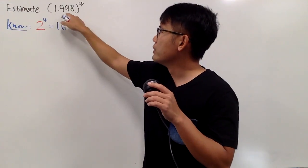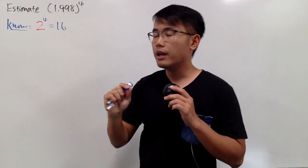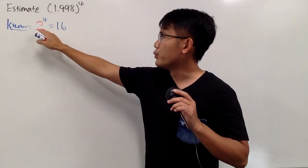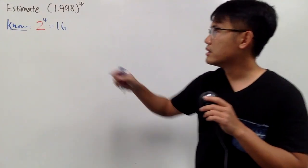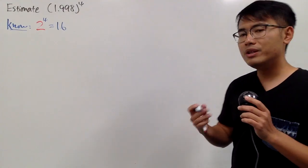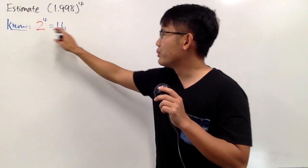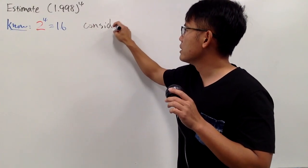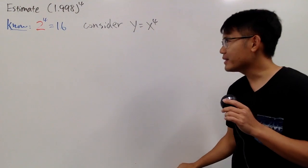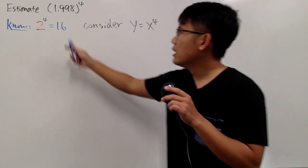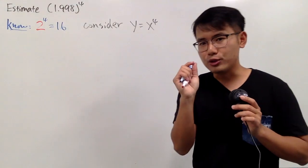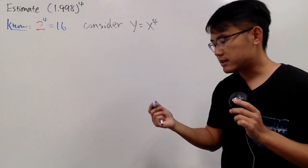This is a good choice because 1.998 is just a little bit less than 2, so we can expect the answer to be a little bit less than 16. When we have something to the 4th power, if the input is less, the output should also be less. From here, we need a function, because without a function we cannot do calculus. So let's consider the function f(x) = x to the 4th power.